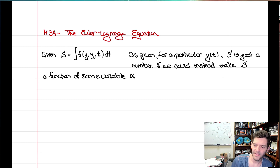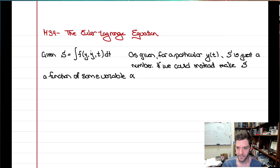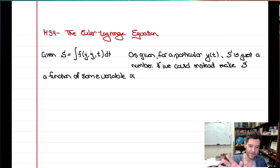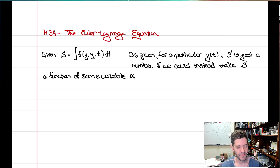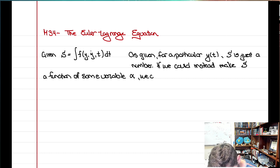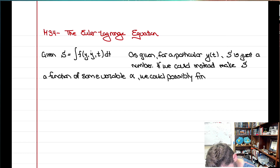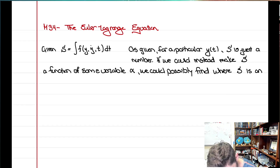...such that for all paths there's this alpha parameter, then S itself would be a function of alpha alone. Because we're integrating over time, all the t's go away, and if y is a function of t written with some constants and this alpha parameter, then we could write S as a function of alpha and possibly find where S is an extremum in the usual Calc 1 way.